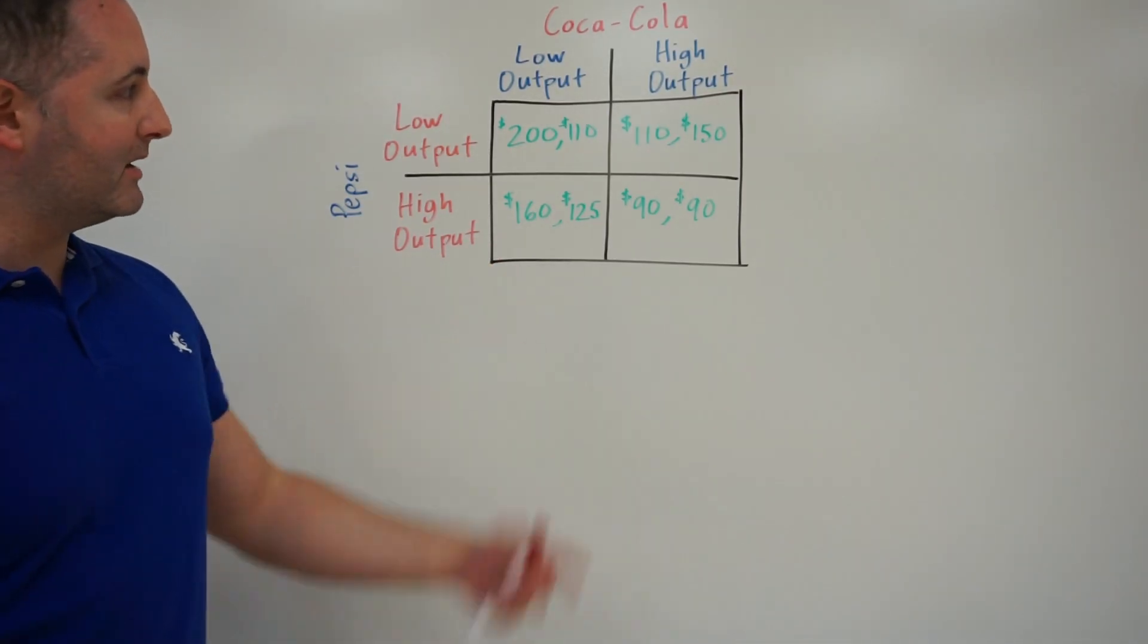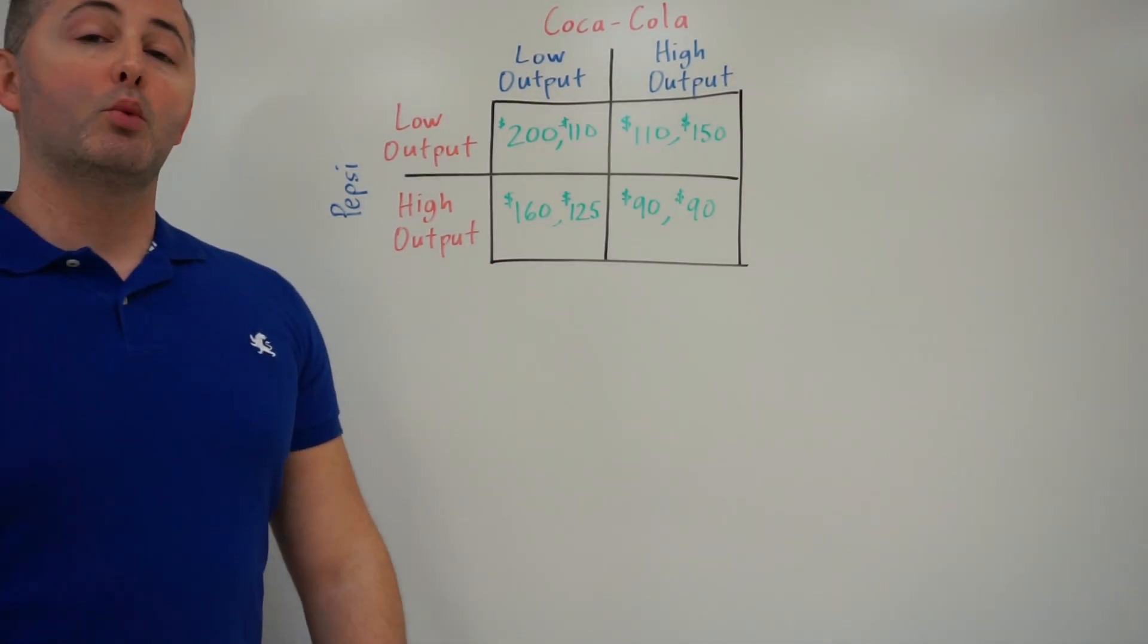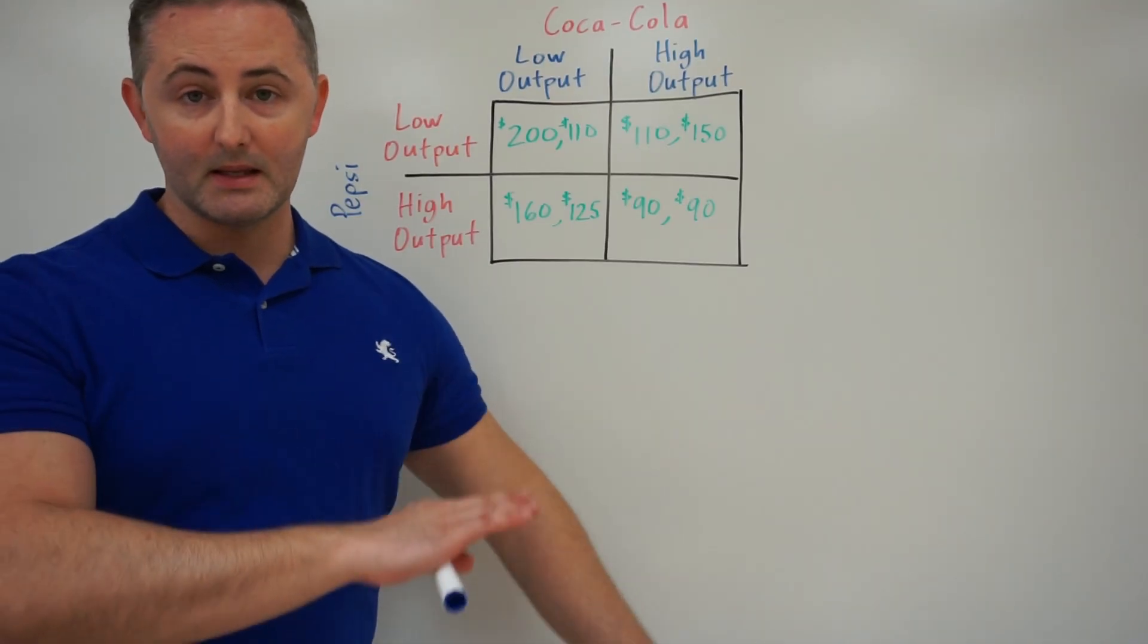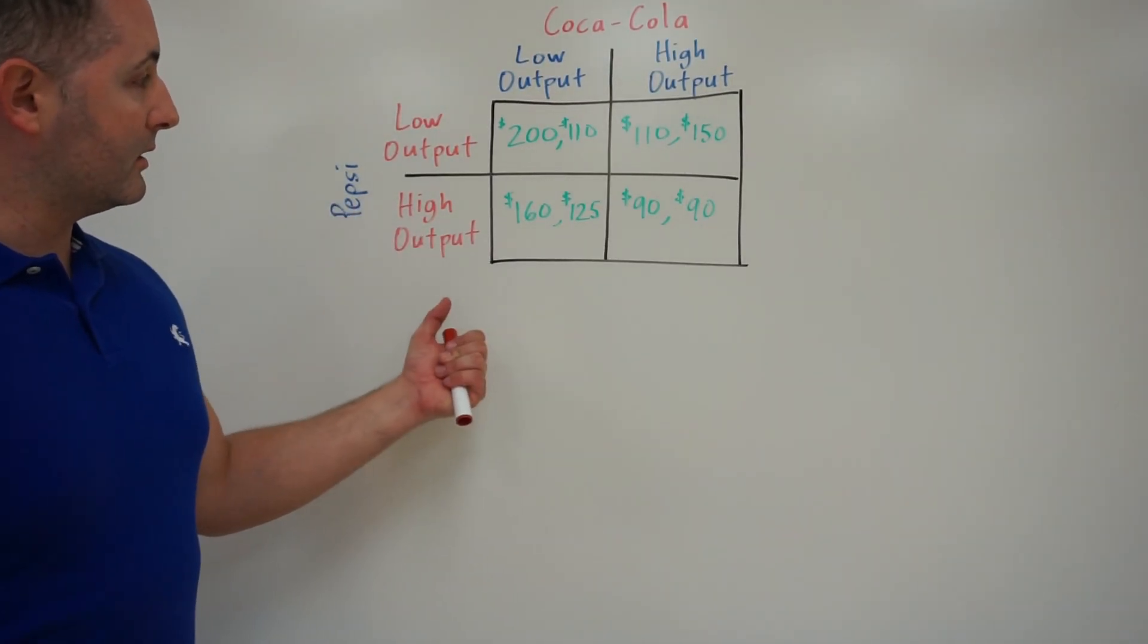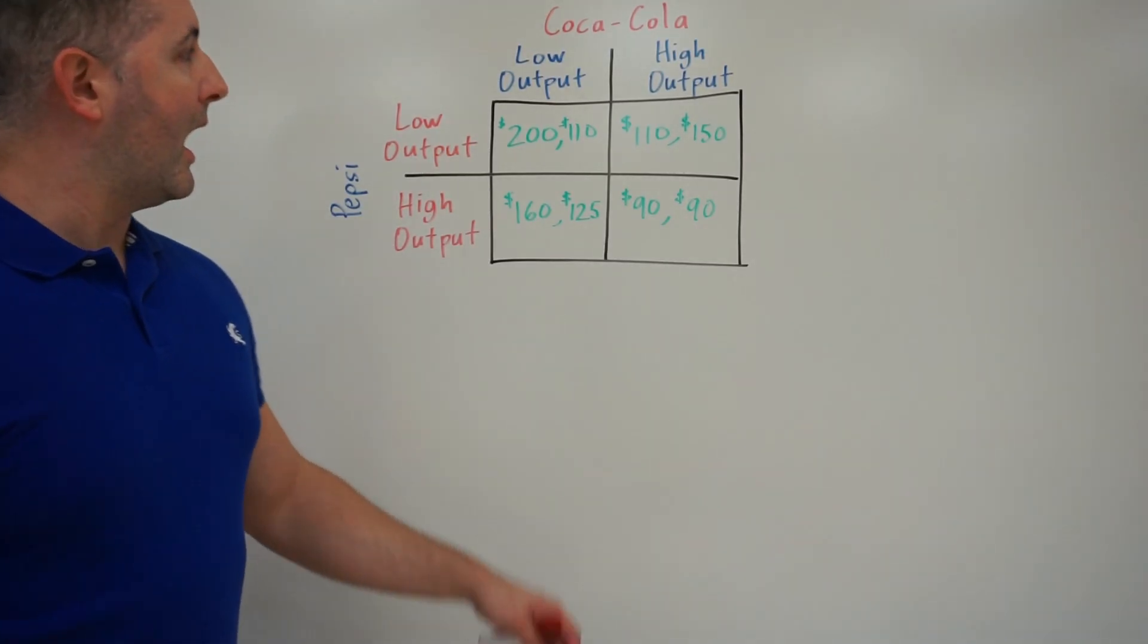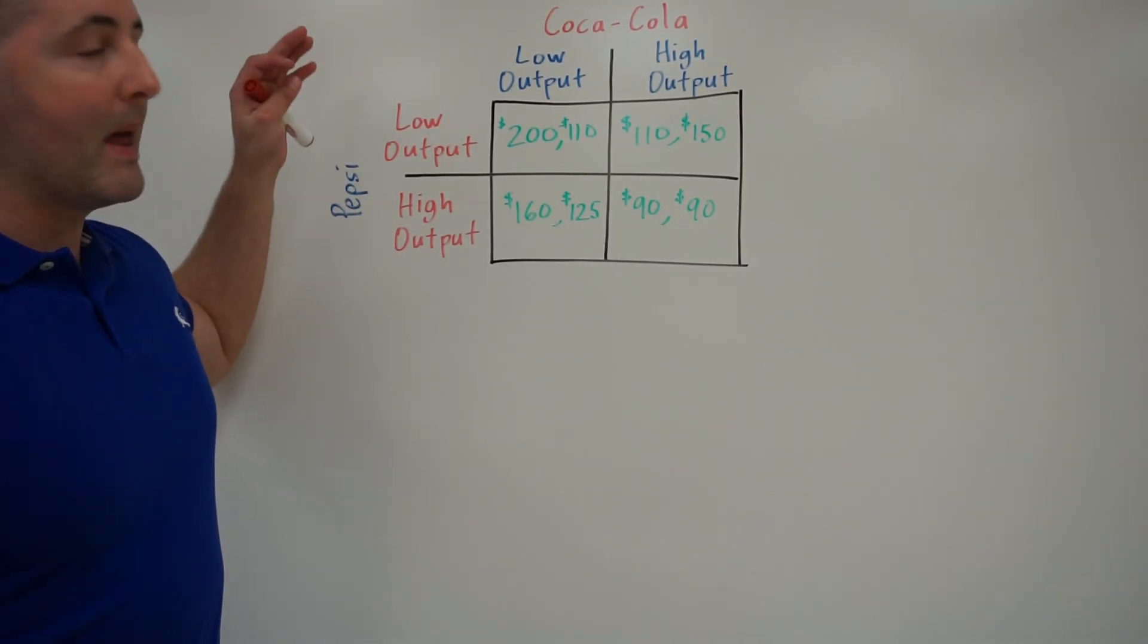So how do we read these? Because we have eight numbers here, we have four boxes. So what exactly are we looking at? Because again, in this video, we're not going to solve this. The next video we will, though. So what we're looking at here is relatively simple. Might look a little intimidating, but it's not that bad.